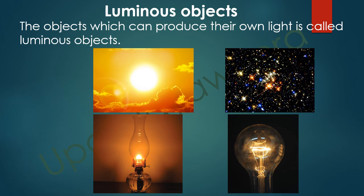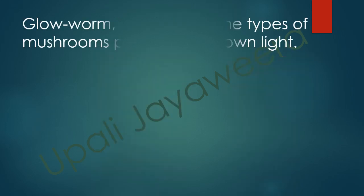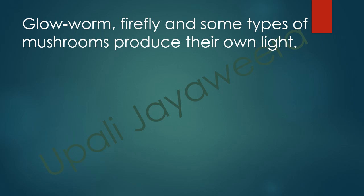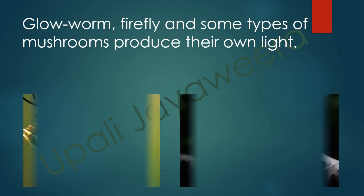Stars, like the sun, produce light and emit it, so stars are luminous objects. A lighted lamp and lighted bulb also emit their own light, so they are luminous objects. Glowworms, fireflies, and some types of mushrooms produce their own light, so they are also luminous.